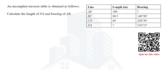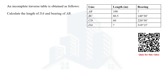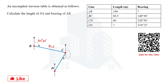To solve this example, first we are going to draw the sketch so we can have a better understanding. We cannot start with point A because the bearing is not given, so we are not sure where the AB line would be heading. We start at point B. The length and bearing of BC line is given — length 80.5 and bearing 140 degrees 30 minutes. Similarly, we know the length and bearing of CD: length 60 meters and bearing 220 degrees 30 minutes.